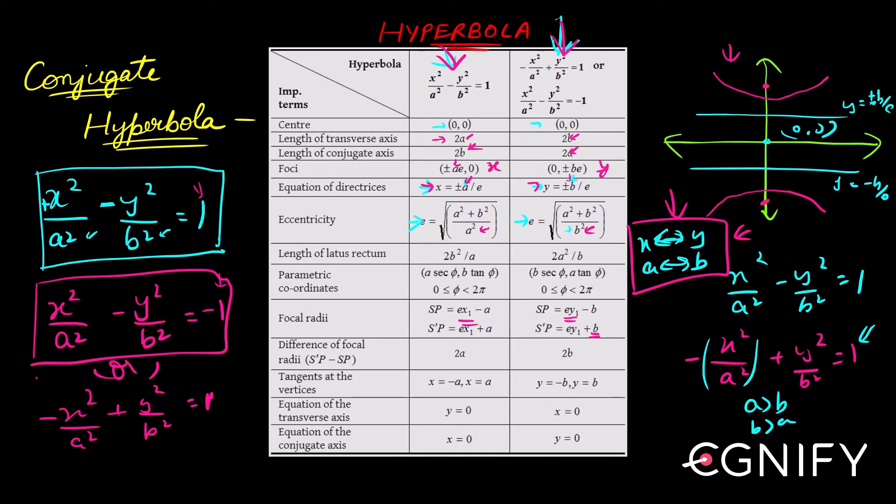That is all there is to understand when it comes to conjugate hyperbola — just this interchange. Let's move on to auxiliary circle and eccentric angle.